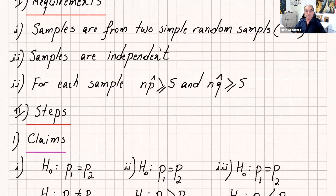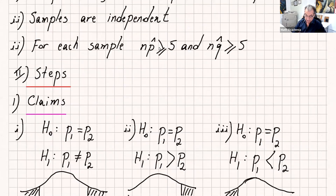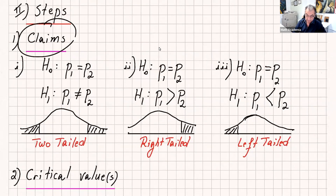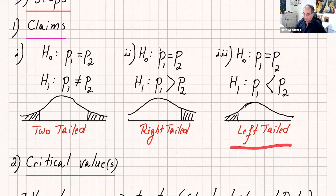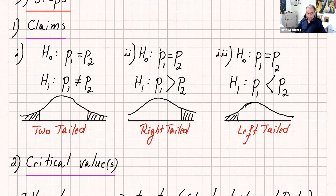Now let's go over the steps. The good news is this is very similar to the steps that we saw when we tested one mean or one proportion. The first step is writing the claim. You can have H0: p1 equals p2 and H1: p1 is not equal to p2 — that's a two-tail test. Or H0: p1 equals p2 and H1: p1 is greater than p2 — that's a right-tail test. Or H1: p1 is less than p2 — that's a left-tail test. Sometimes instead of p1 equals p2 you might see p1 minus p2 equals zero. They're the same thing.